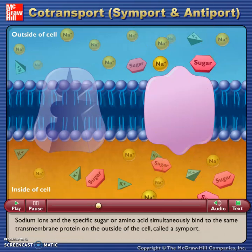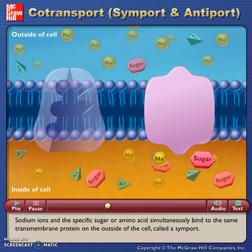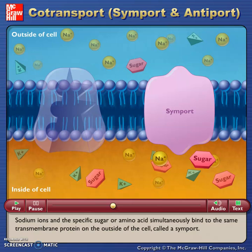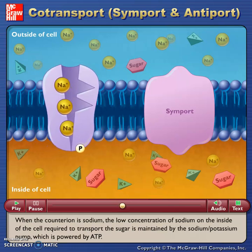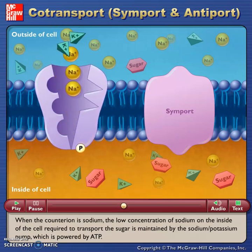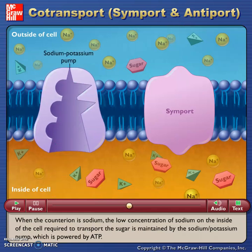Sodium ions and the specific sugar or amino acid simultaneously bind to the same transmembrane protein on the outside of the cell called a symport. When the counter-ion is sodium, the low concentration of sodium on the inside of the cell required to transport the sugar is maintained by the sodium-potassium pump, which is powered by ATP.